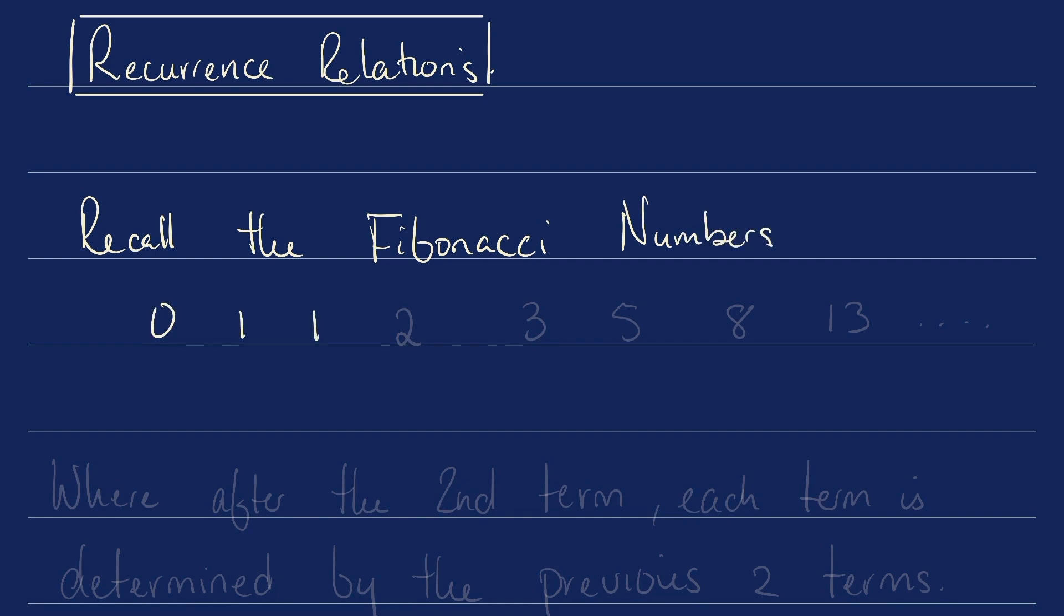0, 1, 1, 2, 3, 5, 8, 13, etc. Remember, after the second term of the Fibonacci numbers, each term is determined by the previous two terms.